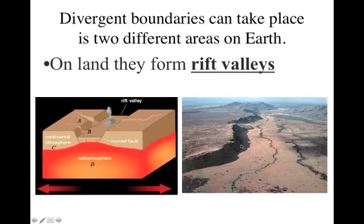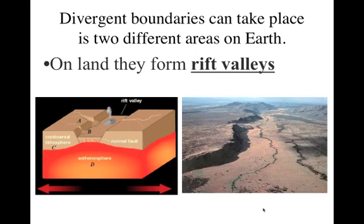So here is a huge rift valley in Africa. You can see here is the edge of one plate and over here is the edge of the other plate, and in here we have our rift valley. Now over millions and millions of years, eventually these plates will go so far apart that ocean or sea from some direction is going to fill this in. And then eventually we will get the same thing happening as in the ocean — we will form an oceanic ridge and seafloor spreading. But on land we get a rift valley. So those are our two different possibilities for a divergent boundary, both in the ocean and on land.